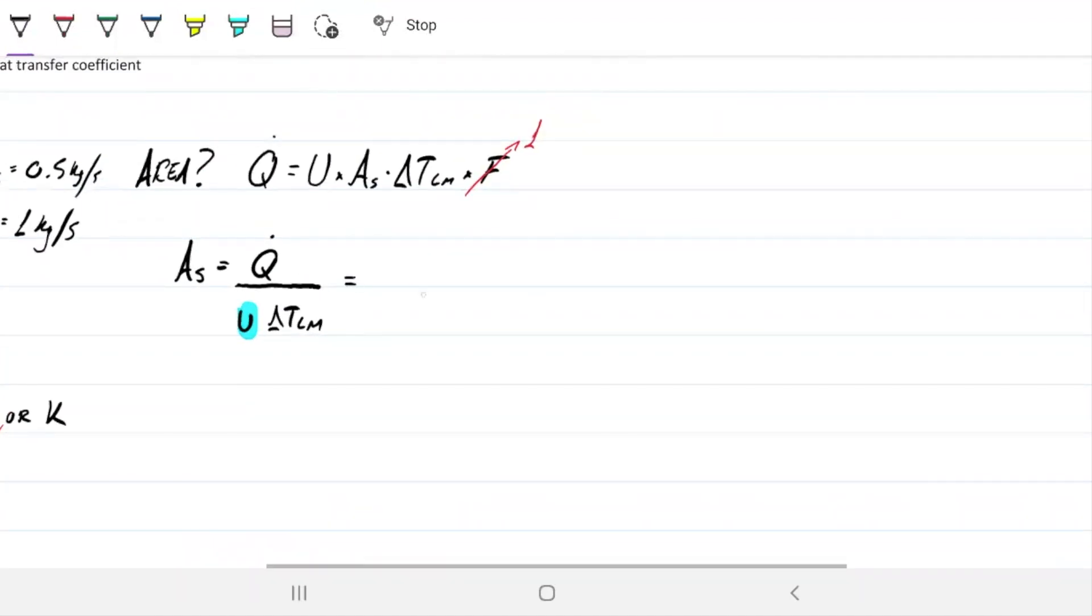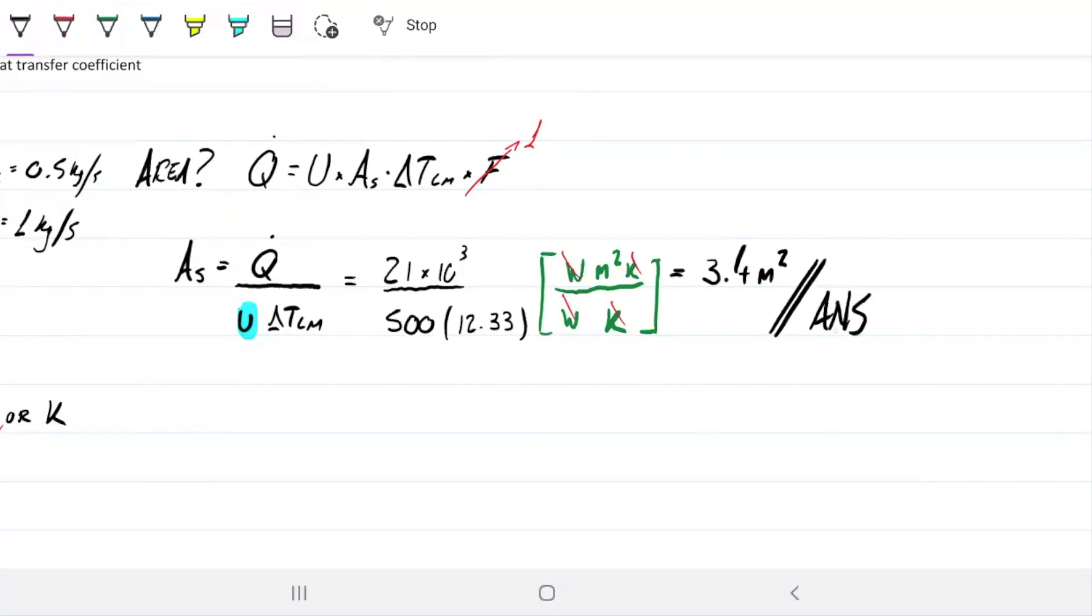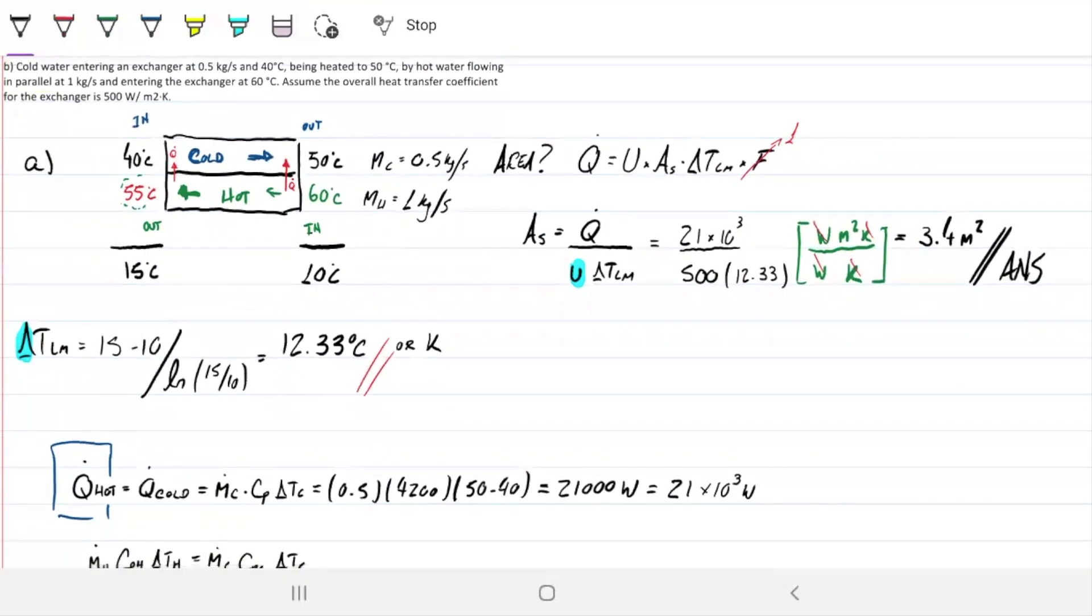Surface area will be 21×10³ watts divided by U which was 500, and delta T log mean 12.33. We're not dumb, so we know units are important. Watts on top, then dividing we have watts per meter squared Kelvin on the bottom, we have Kelvin. We'll be left with meter squared, which is a unit for area, so all good. We did a good job. 3.4 meter squared. So this heat exchanger needs 3.4 m² of area to take the 40°C water to 50°C, and the 60°C water down to 55°C under these conditions.